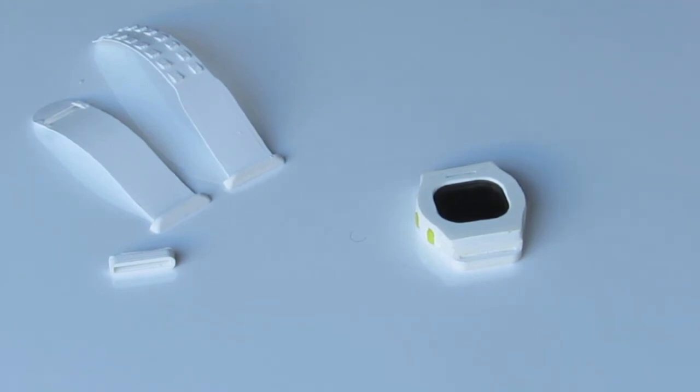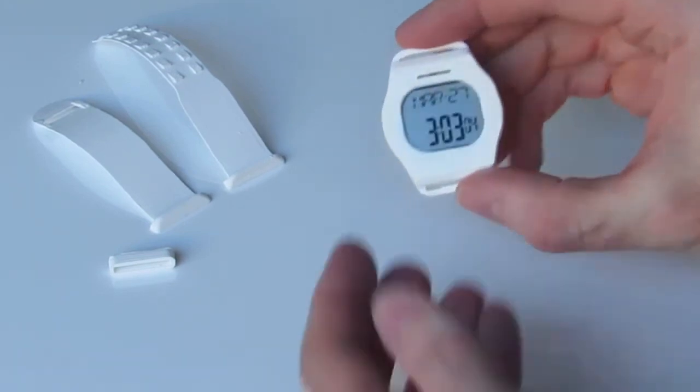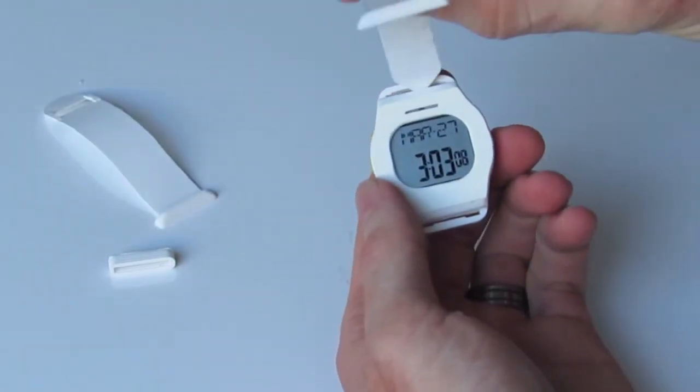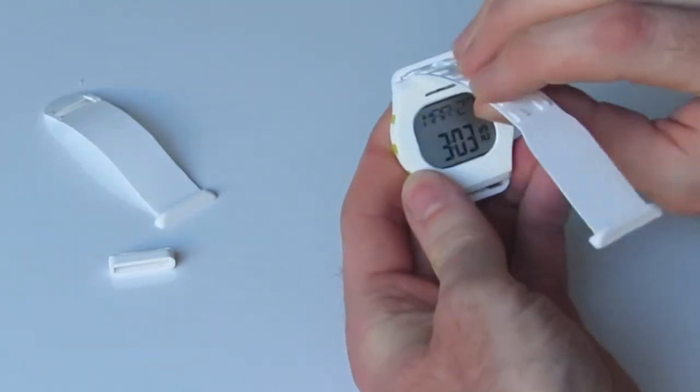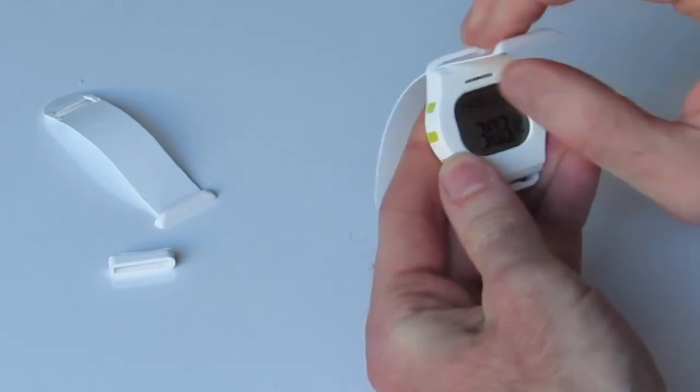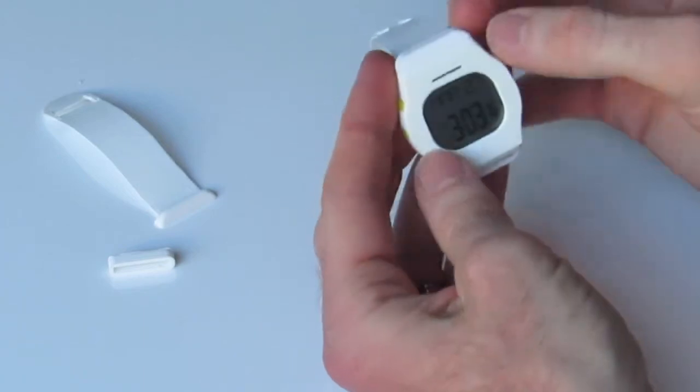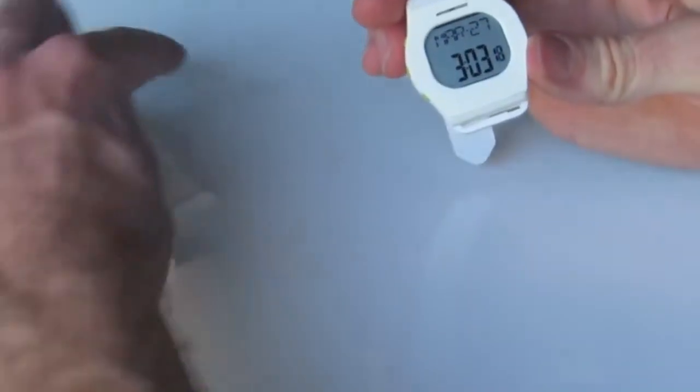Next we want to install our straps. We've got this longer strap which goes on the top of the watch. We simply feed that through from the top side and then it'll just wedge into place there.